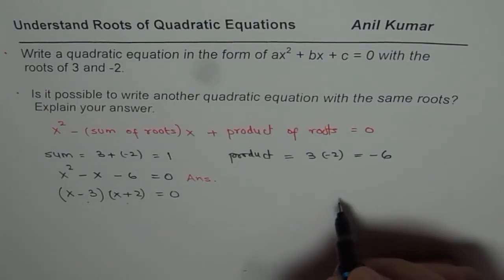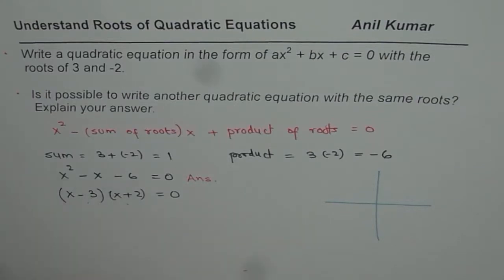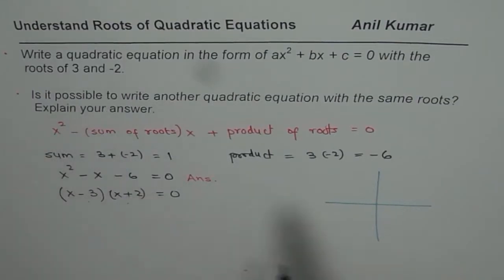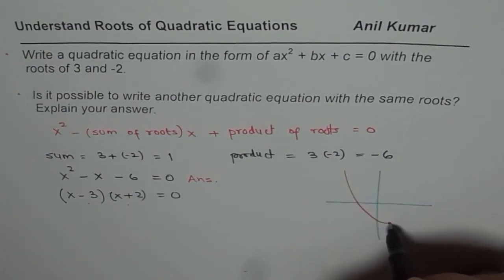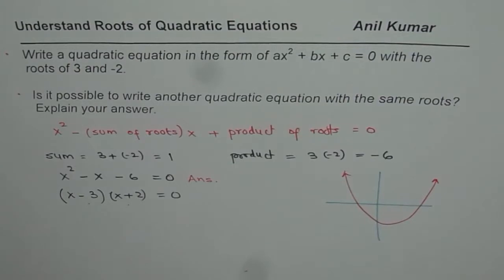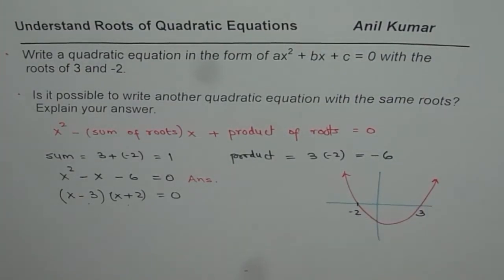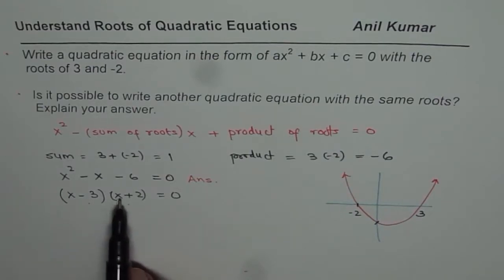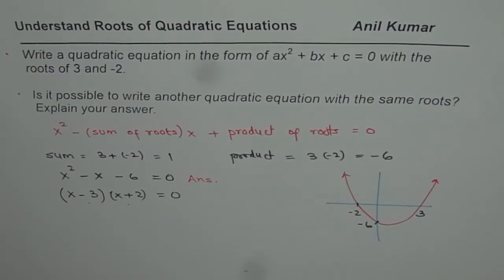Now when you write this, then you could actually sketch it something like this. Roots at 3 and -2. So we could have a parabola which would go kind of like this, with roots at 3 and -2. Now in this case, our y intercept could be, here if I substitute 0, I will get -6. So -6 becomes y intercept, the value which we have here.